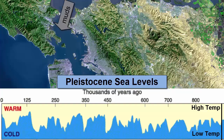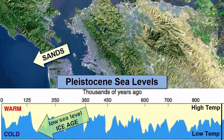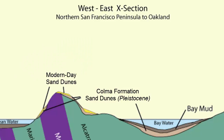Over the last two million years of Earth's history, known as the Pleistocene, sea level has risen and fallen as we've gone in and out of ice ages. When sea level is high, we see mud settling around most of San Francisco Bay, creating our salt marsh wetlands. When sea level is low during an ice age, the Sacramento River rushes out to the new coastline and sands are deposited. When we look at a cross-section of surface sediment across San Francisco Bay, we see alternating layers of sand and mud, which provide evidence of how the bay has been changed by natural processes over its history.